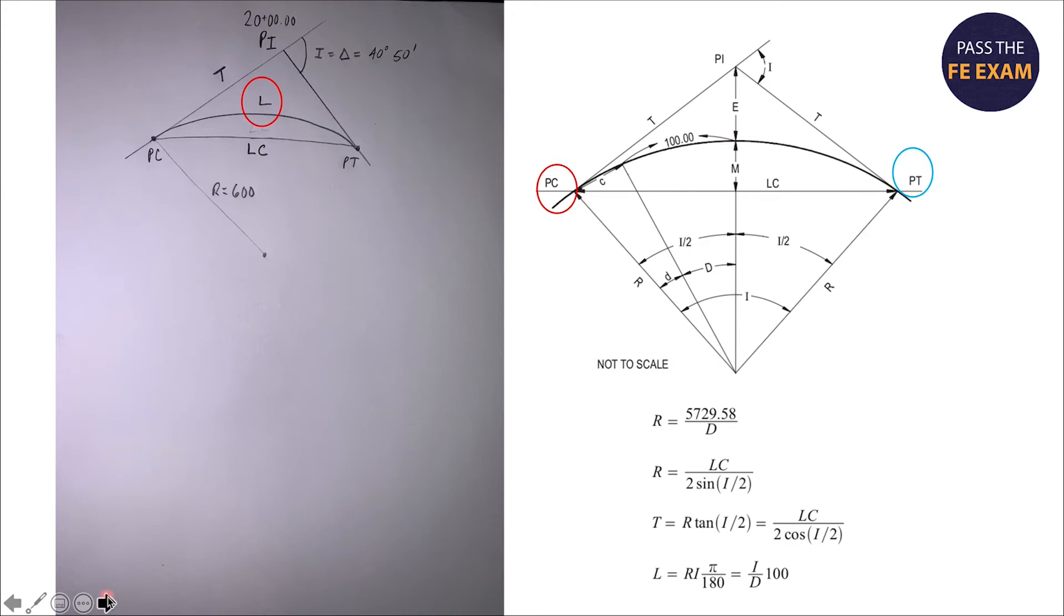Now what I want to do is think through, and this is something you should do on all of your problems. Think through what you're looking to get and how you can find it based on the data that's given. We know we need the PT, and we know if we can solve for the PC and solve for the L, then we can add the two together to get our PT. Now what we need to do is look at the equations that have been provided and try to determine, can we figure that out based on what we have? And the answer is yes.